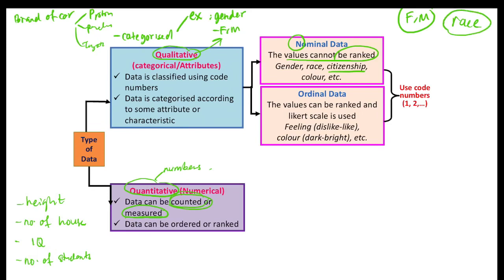Ordinal data is data that can be ranked. For example, your feeling can be ranked from dislike to like, or in a questionnaire you rank 1 for satisfied, 2 for very satisfied, 3 for very very satisfied — that is ordinal data.